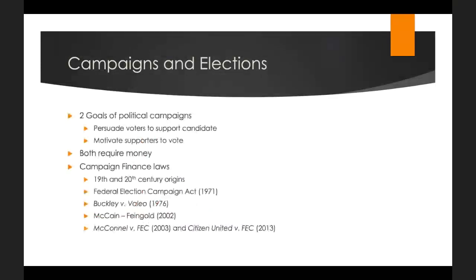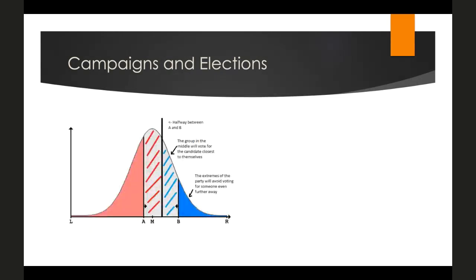Super PACs are issue-oriented political action committees that cannot contribute money directly to candidates or coordinate with campaigns, but they can run issue-specific ads that prime voters to vote in particular ways. This is where much of the concern about money in politics is centered. So what exactly are campaigns targeting, and who are the voters they're trying to influence?